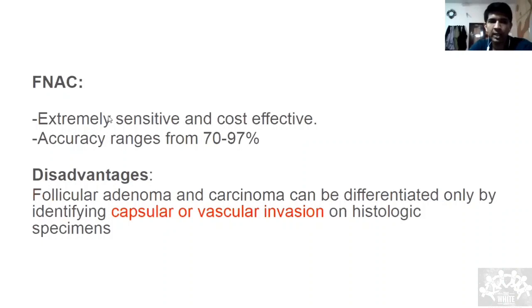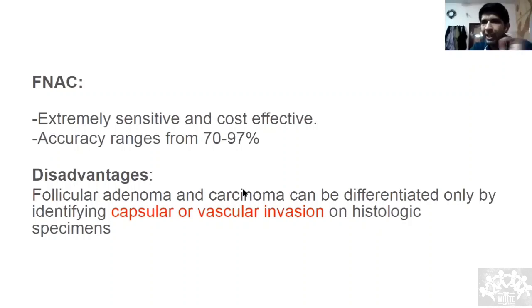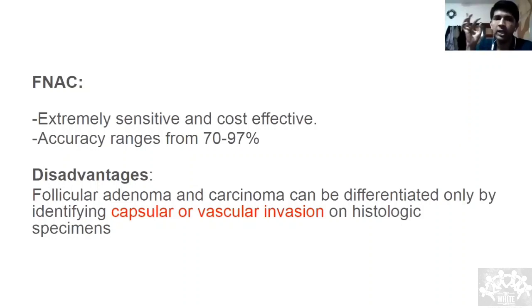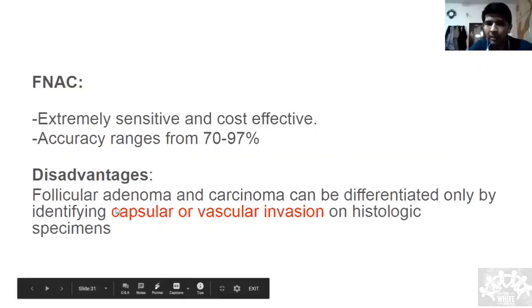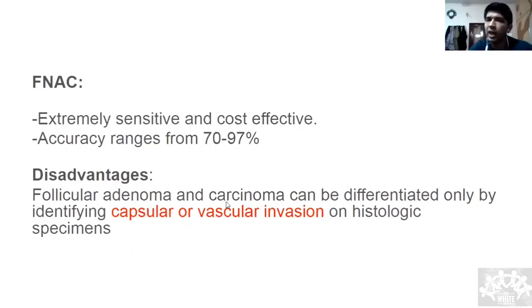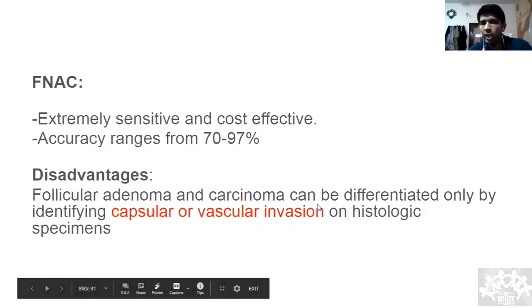FNAC is extremely sensitive and cost-effective. The key disadvantage: FNAC cannot differentiate between follicular adenoma and follicular carcinoma, because FNAC only samples one or two cells and is not a biopsy. This is a very important point — FNAC cannot differentiate follicular carcinoma from follicular adenoma.